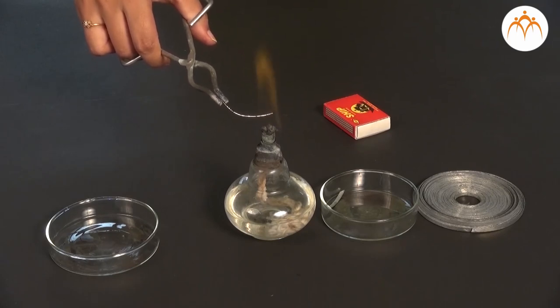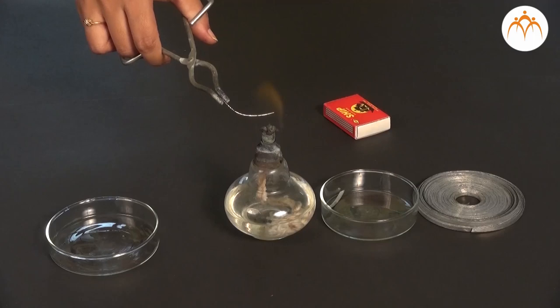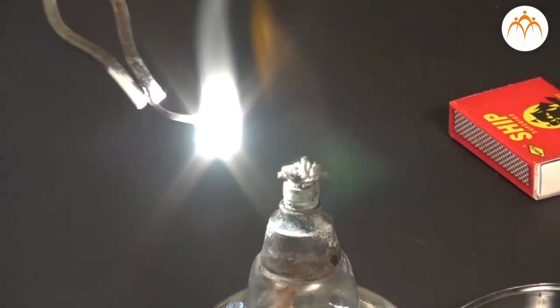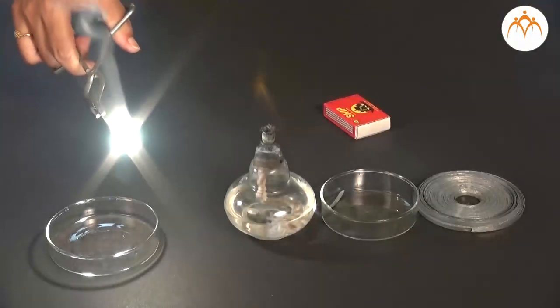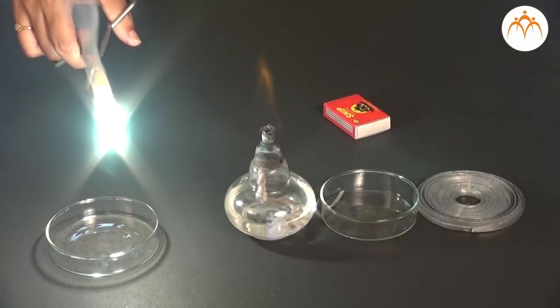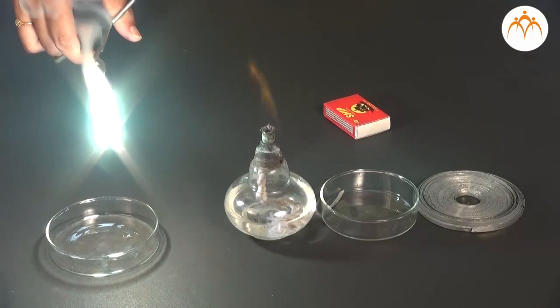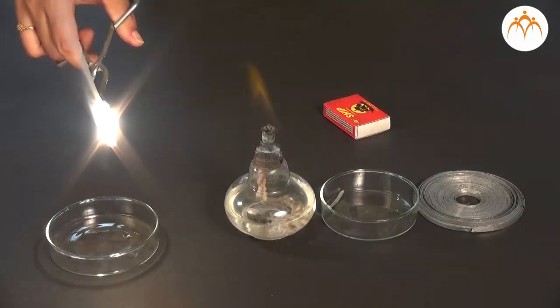You will observe that magnesium burns brilliantly with a luminous flame and white ash is left behind. The flame is very bright. A very fast reaction takes place. Only one product is formed. Ash collected in the watch glass. No gas is produced.